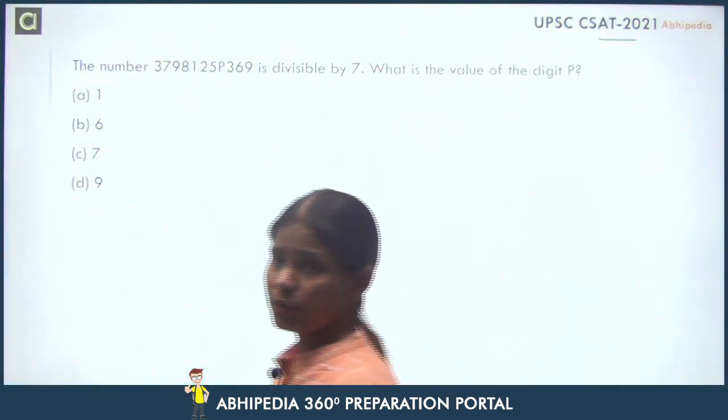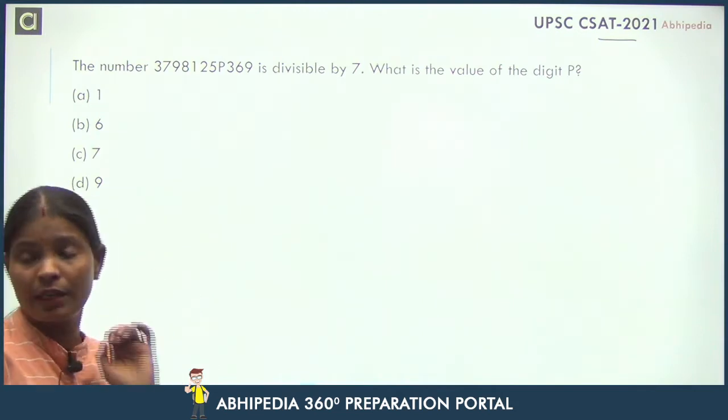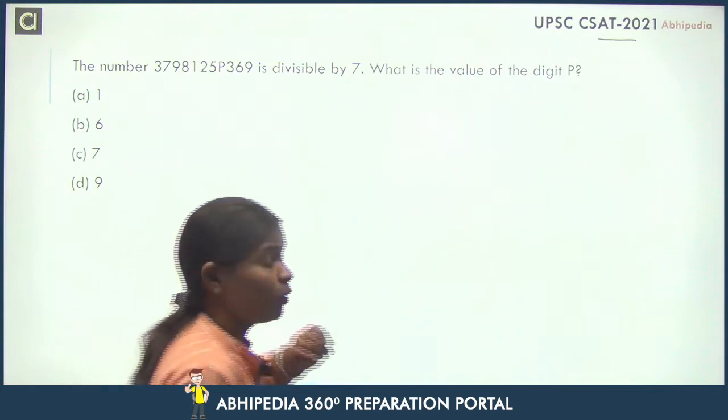Now what is the question here? The number 3798125P369 is divisible by 7. What is the value of the digit P?